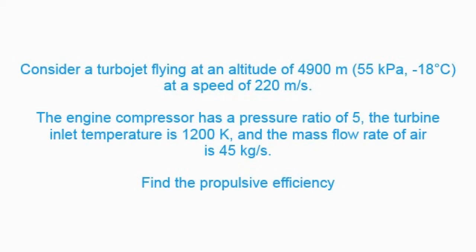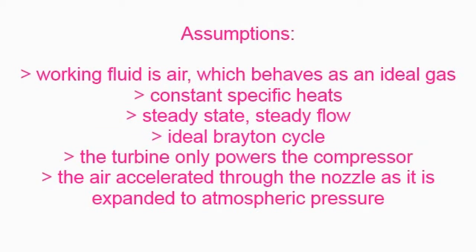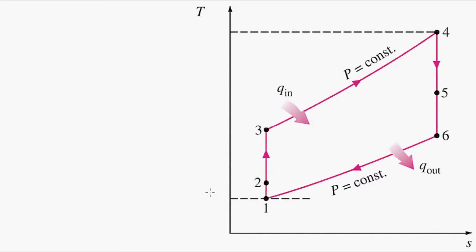Here we're considering a jet propulsion cycle with a gas turbine. We're given a turbojet engine with these parameters and we're asked to find the propulsive efficiency. Here's our standard assumptions with constant specific heat and the cycle we're using.